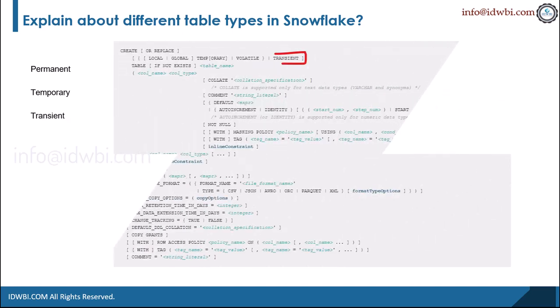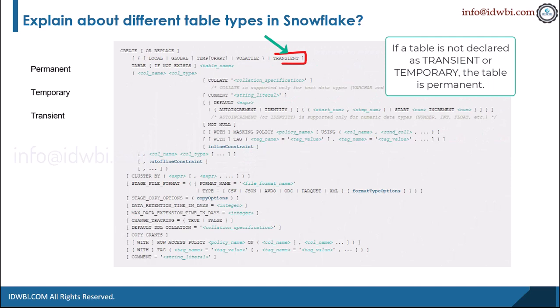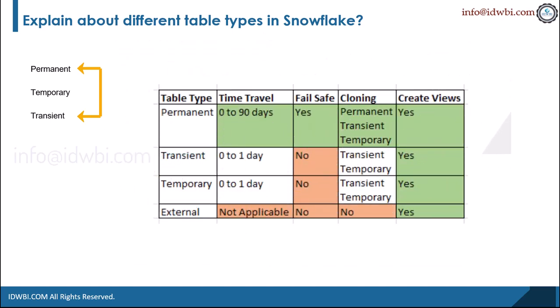The third type of tables are transient tables. Snowflake supports creating transient tables that persist until explicitly dropped and are available to all users with the appropriate privileges. Transient tables are similar to permanent tables with the key difference that they do not have a fail-safe period. This means transient tables are specifically designed for transitory data that needs to be maintained beyond each session — in contrast to temporary tables — but does not need the same level of data protection and recovery provided by permanent tables.